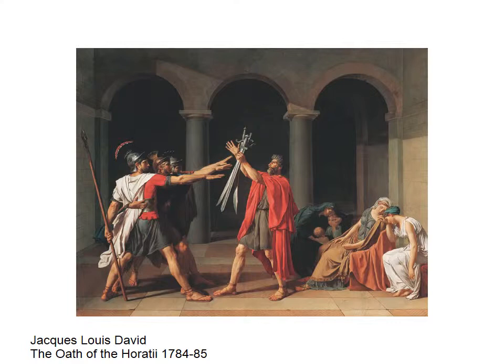The Horatii boys were feuding with a family called the Curiatii family, from a city called Alba Longa, also in Italy. This stirring moment is supposed to remind us of the purpose of self-sacrifice, of giving oneself over to a greater good. The three Horatii brothers fight the three Curiatii brothers. Only one of the Horatii brothers survives, while all three Curiatii brothers are killed.